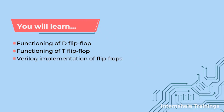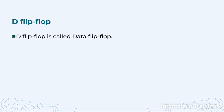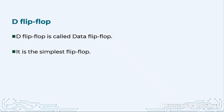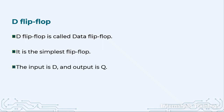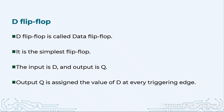We are going to see how to implement both of them in Verilog. When we talk about D flip-flop, D stands for data, so this is the most basic or simplest flip-flop. There is only one input, D, and one output, Q. The output Q is assigned the value of D at every triggering edge — whether it is a positive edge or negative edge of the clock.